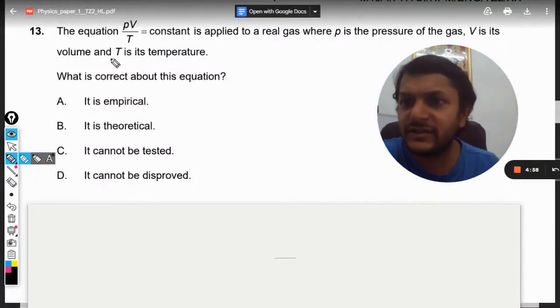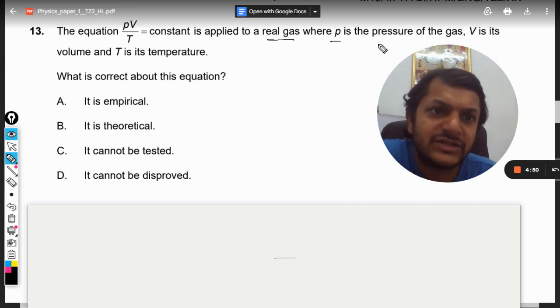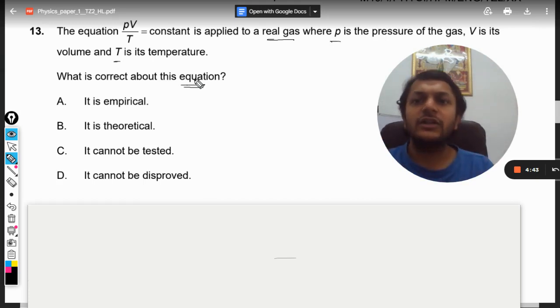Okay, so let us see what is there in this question. The equation PV/T is equal to constant is applied to a real gas where P is the pressure, V is the volume, and T is temperature. What is correct about this equation?